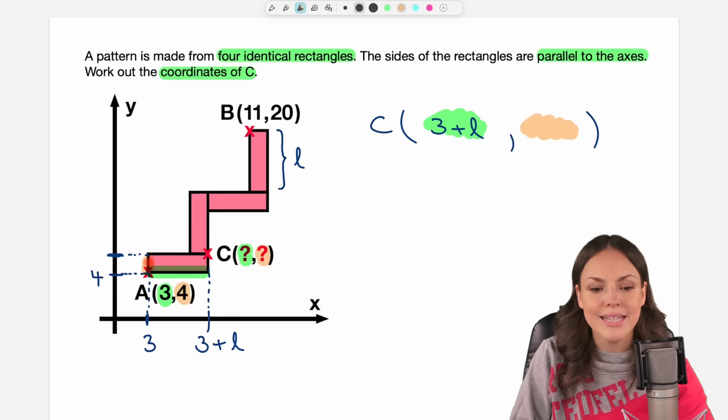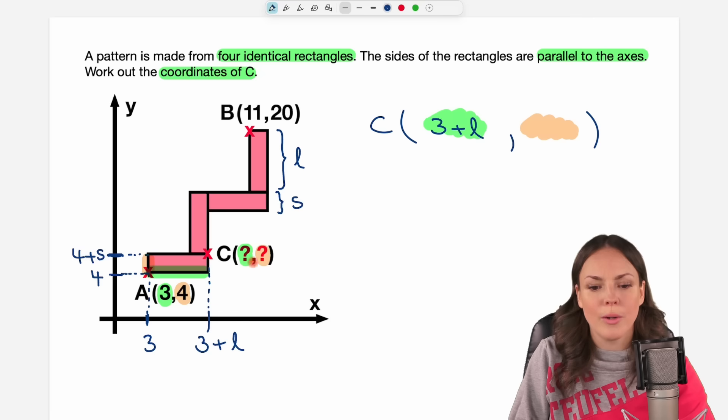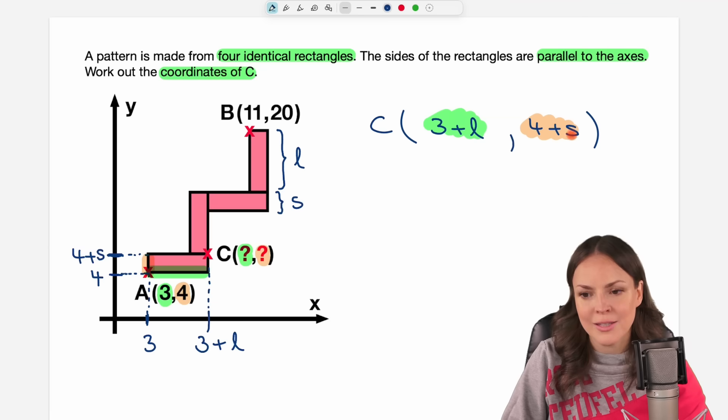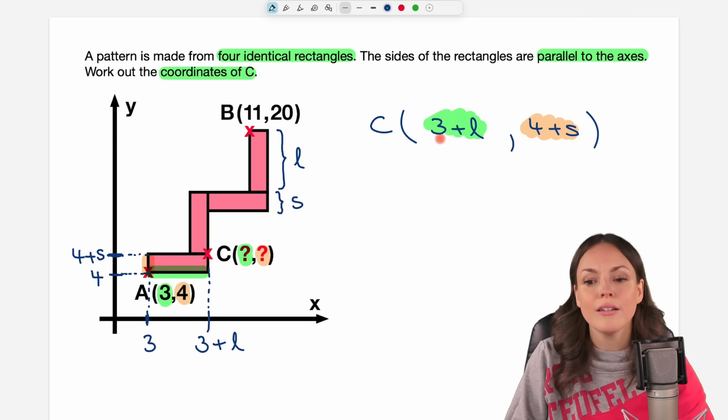We can just walk this way this time, which is the short side of my rectangle. We don't know yet how long this side is, but let's give it a name. Just call it S for short. And we get from here to here by taking the 4 and adding the length of the short side, so plus S. So that my y-coordinate is going to be 4 plus S. So if we know L and S, we can find the coordinates of our point C.